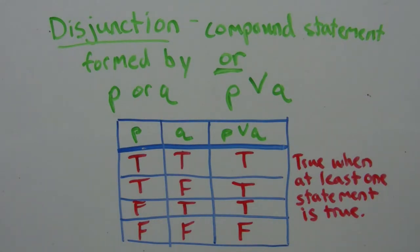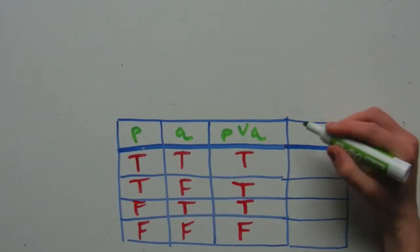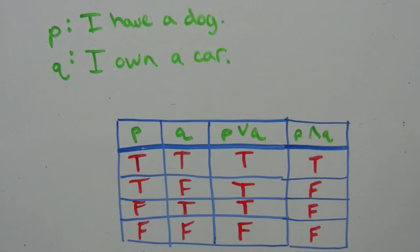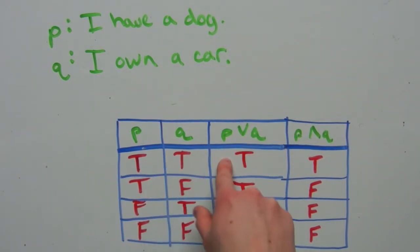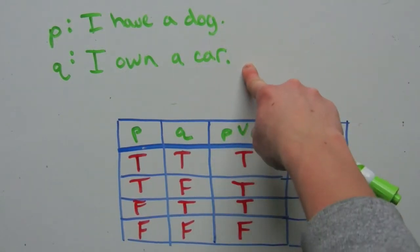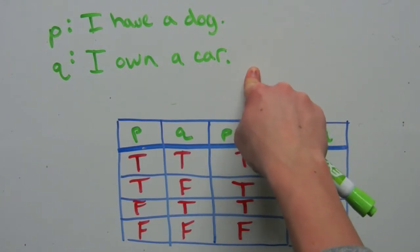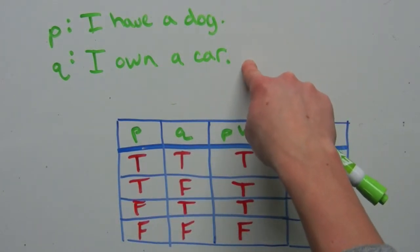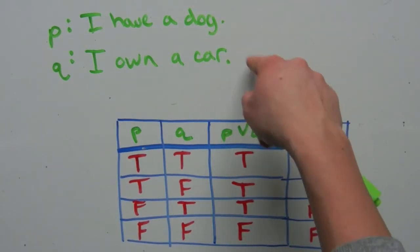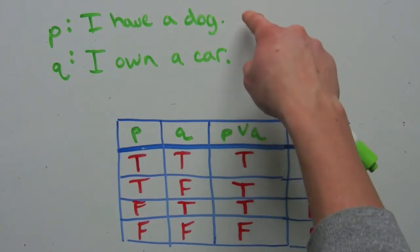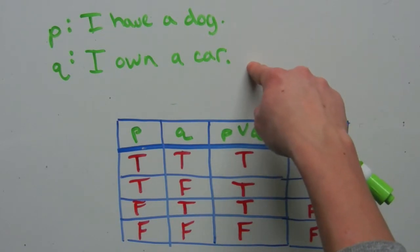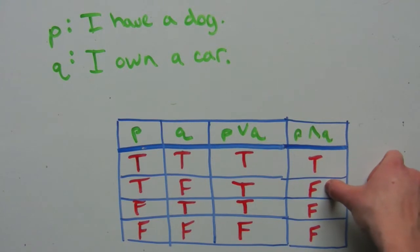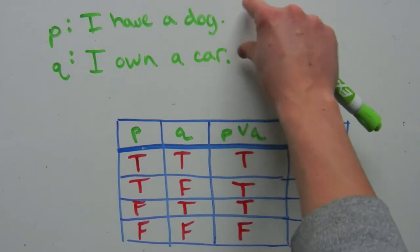Let's go over an example where P and Q are actual statements. P is 'I have a dog' and Q is 'I own a car.' If both statements are true, then 'I have a dog or I own a car' is true, and 'I have a dog and I own a car' is also true. If I have a dog but don't own a car, I still have at least the dog, so the disjunction is true. But technically I don't have a dog and a car, so the conjunction P and Q is false.